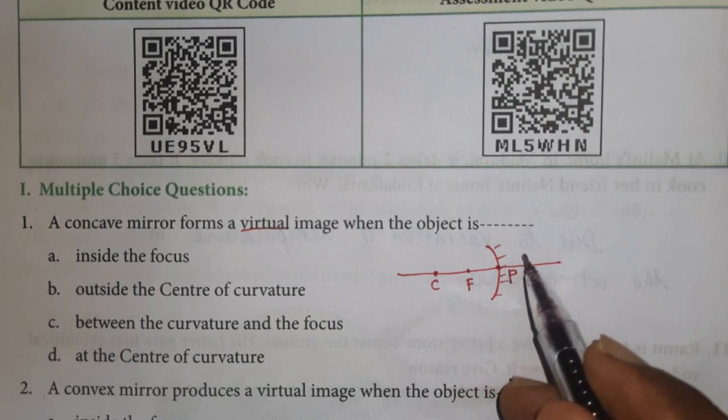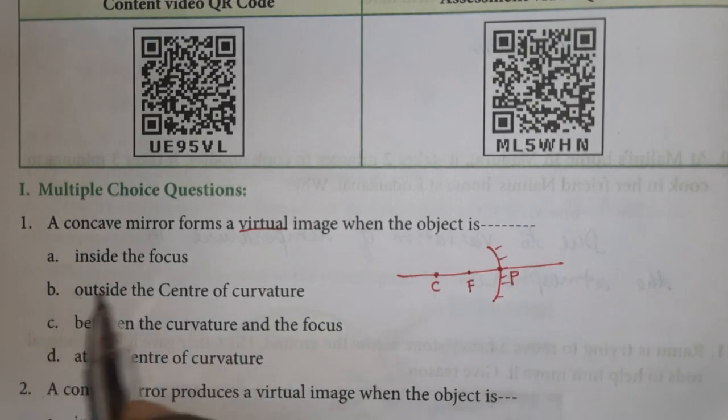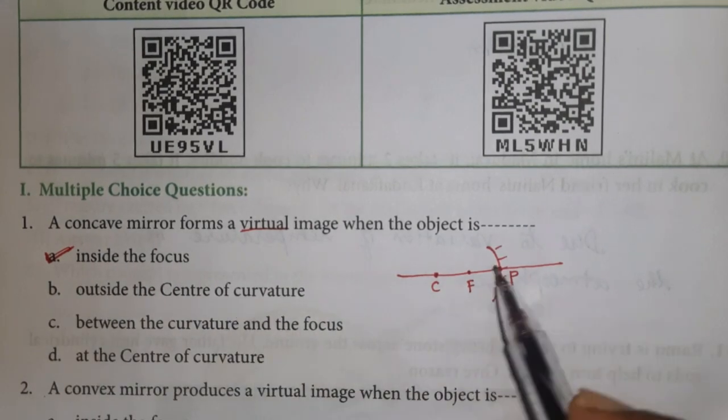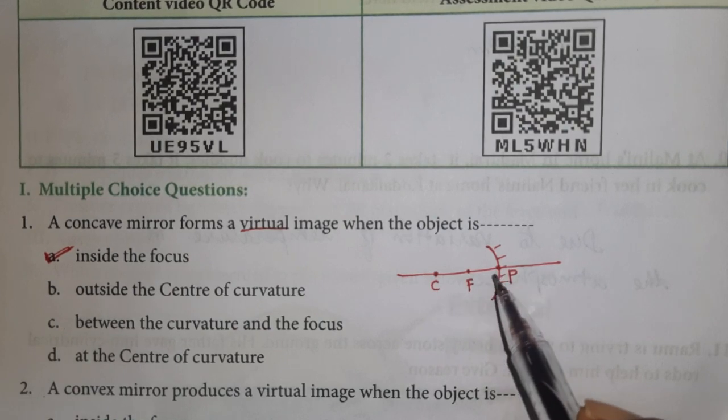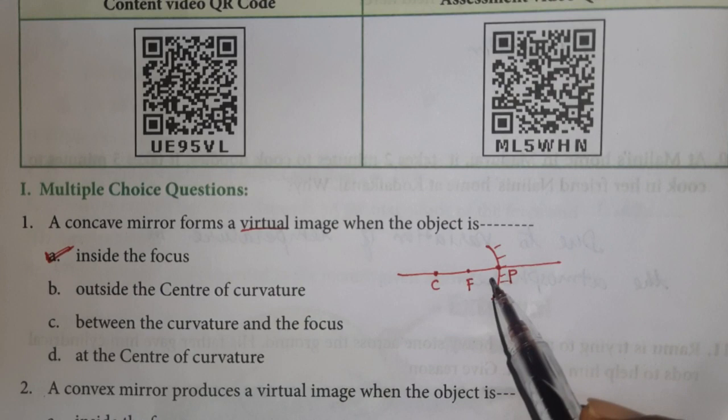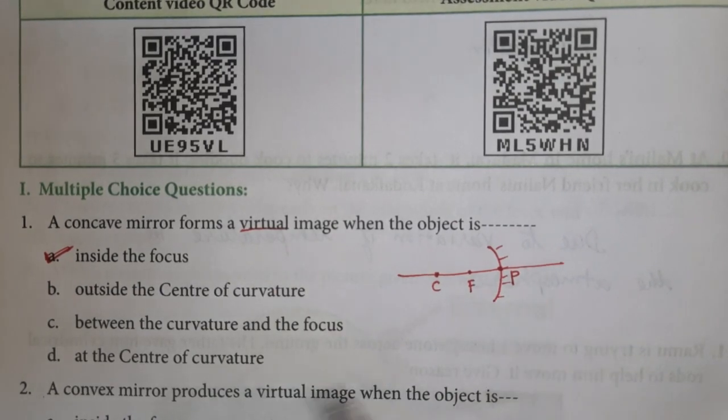So the option is inside the focus. When the object is placed inside the focus, we will get the virtual and erect image.